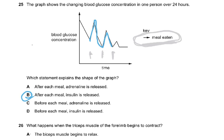Adrenaline is released in a fight, fright, and flight situation — not after meals. Insulin is released before each meal is wrong: insulin is only released when your blood glucose concentration rises. If your blood glucose is 100 and you eat a piece of chocolate cake, your blood glucose rises — only then is insulin released. That is why the answer is B.